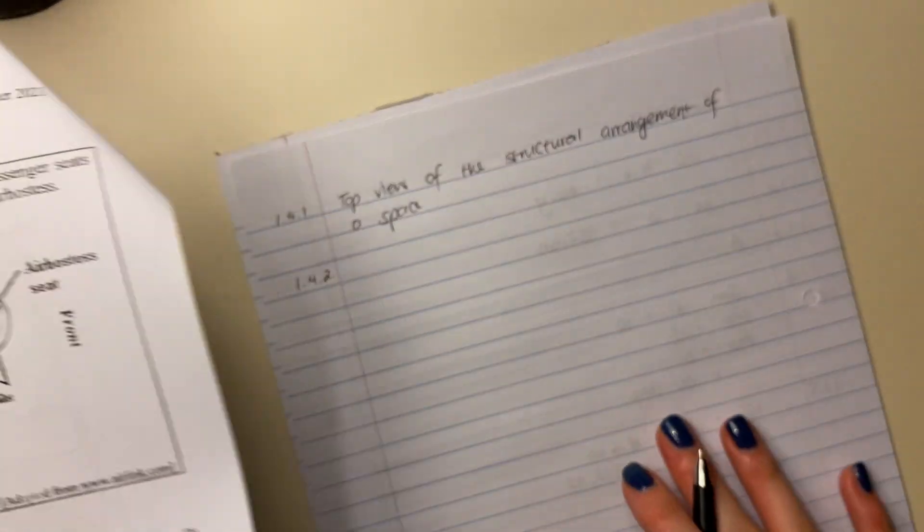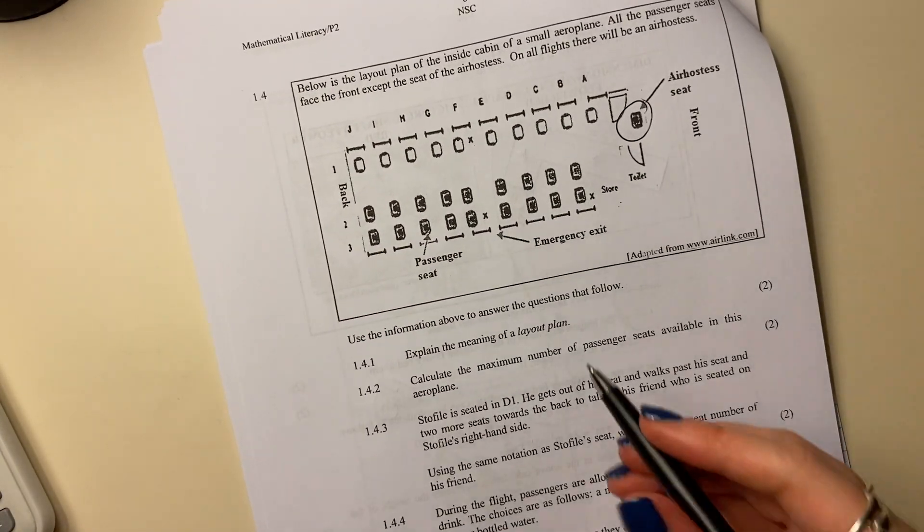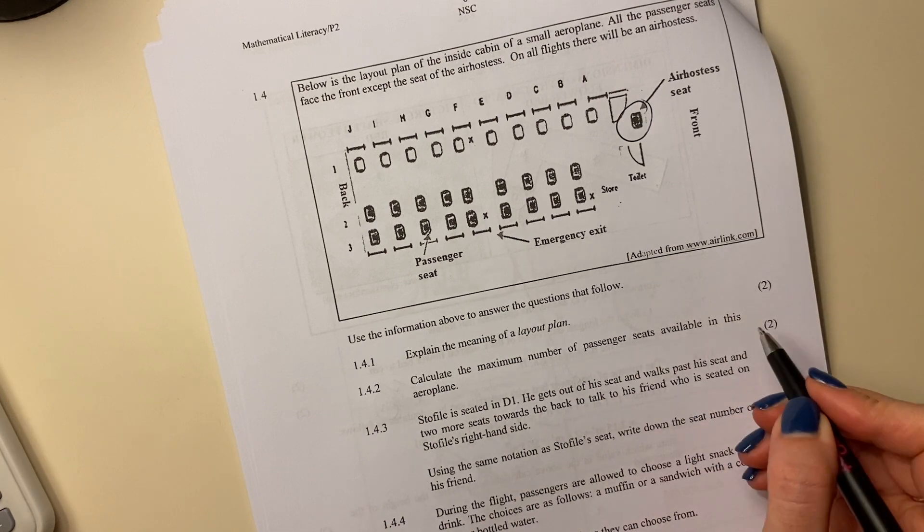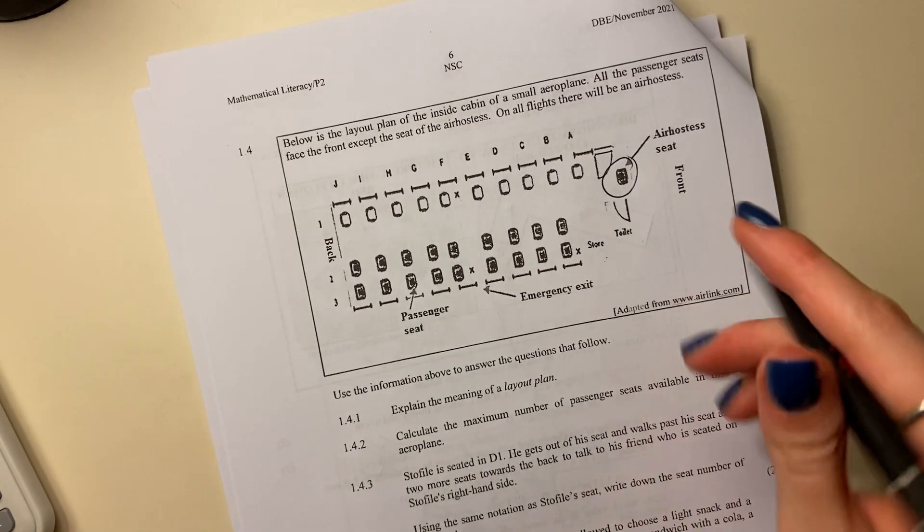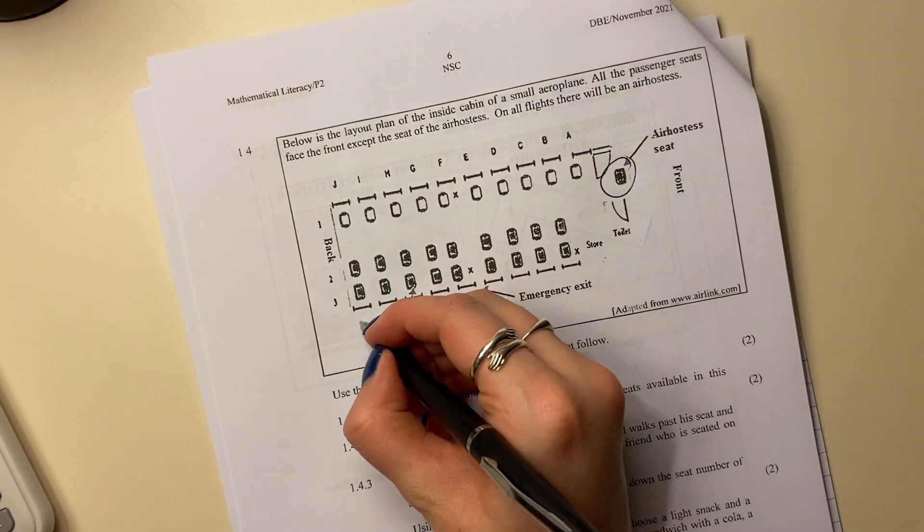Let's move on now to some sort of non-definitional things. It says calculate the maximum number of passenger seats available in this airplane. Okay, so can't count the air hostess. So in each row there's three.